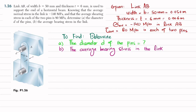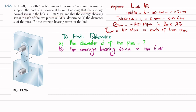Welcome back. Problem 1.26. The statement is: link AB of width B = 50 millimeter and thickness 6 millimeter is used to support the end of a horizontal beam. Knowing that the average normal stress in the link is minus 140 megapascal and the average shearing stress in each of the two pins is 80 megapascal, determine: A) the diameter of the pin, and B) the average bearing stress in the link.